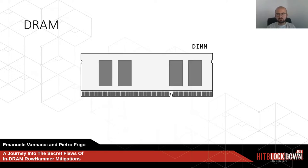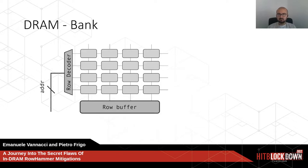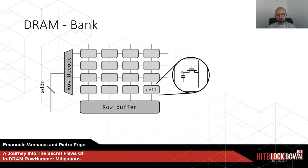DRAM data is stored in chips on a DIMM, and inside the chips you have banks. A bank is a two-dimensional array of memory cells, each containing a capacitor and a transistor. The capacitor stores your data while the transistor acts as a gate. Every cell contains a single bit of information. To perform a memory operation, you rely on the row buffer and the row decoder.